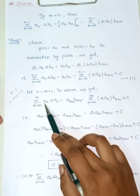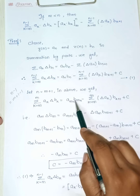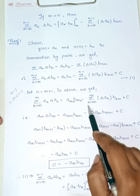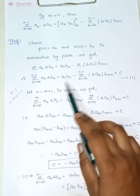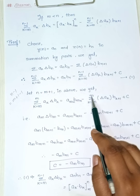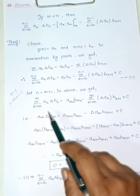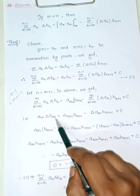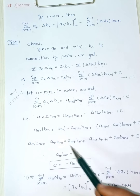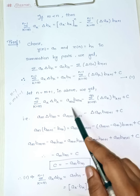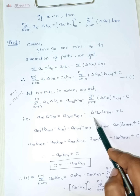This gives summation of a_k delta b_k equals a_{m+1} times b_{m+1} minus summation from k equals m to m of delta a_k times b_{k+1} plus constant. Putting n equals m plus 1, the upper limit becomes m plus 1 minus 1, which equals m. So we get a_m delta b_m, applying the limits.